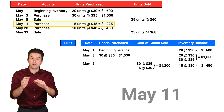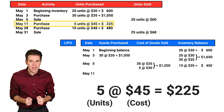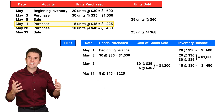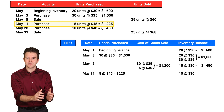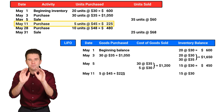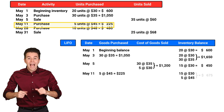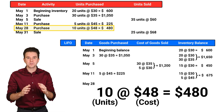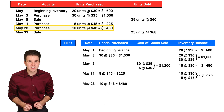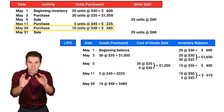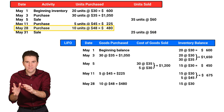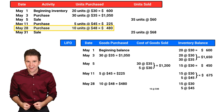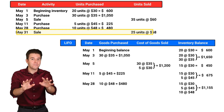On May 11th, we purchased 5 units at $45 per unit. Looking at our inventory balance, we see 15 units at $30 and 5 units at $45. On May 28th, we purchased 10 units at $48 per unit. Looking at our inventory balance, we see 15 units at $30, 5 units at $45, and 10 units at $48.